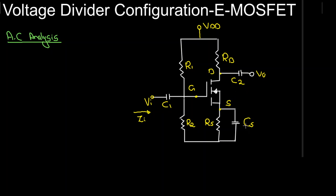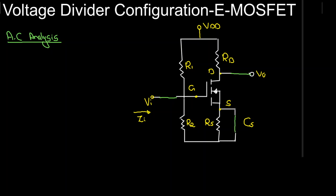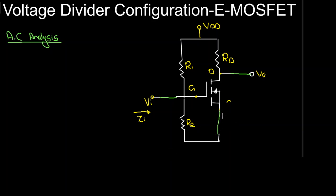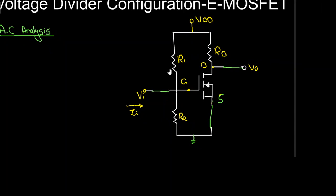For the AC analysis, capacitors C1, C2, and Cs will be shorted out, so I can replace these capacitors by short circuits. When this capacitor is short-circuited, the resistance Rs will also be short-circuited. So Rs is shorted, and the source terminal is connected to ground.